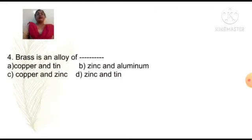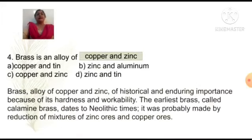Brass is an alloy of: Option A copper and tin, Option B zinc and aluminum, Option C copper and zinc, Option D zinc and tin. Answer is Option C copper and zinc. Brass, alloy of copper and zinc, of historical and enduring importance because of its hardness and workability. The earliest brass called calamine brass dates to Neolithic times. It was probably made by reduction of mixtures of zinc ores and copper ores.